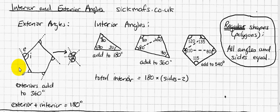So each one would be 36, 36, 36, 36, 36. So that's exterior angles explained nice and easy.